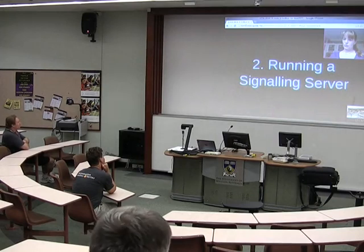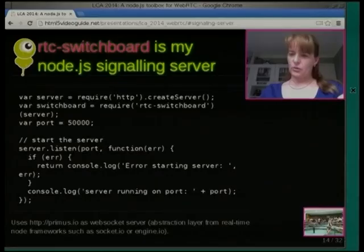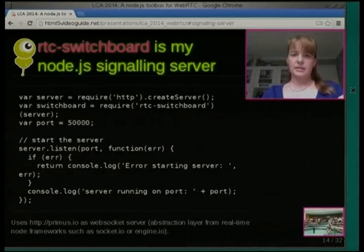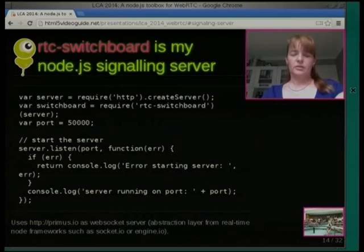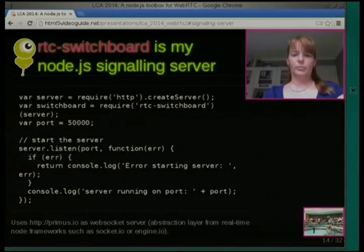For the signaling server, we use Node.js with a little extension called RTC Switchboard, and RTC Switchboard uses Primus — primus.io. They're all different Node modules you just have to put together, and it already runs your signaling server. It's as easy as just this little piece of code: server.listen on the port. That's all it does — it listens on the port and when it gets a message it sends it along.